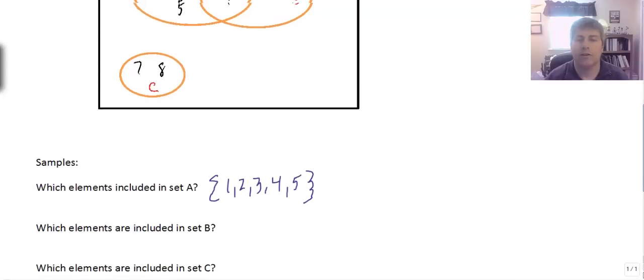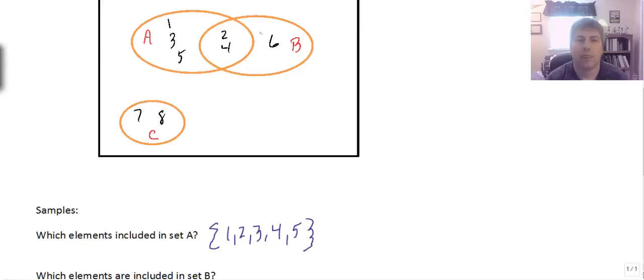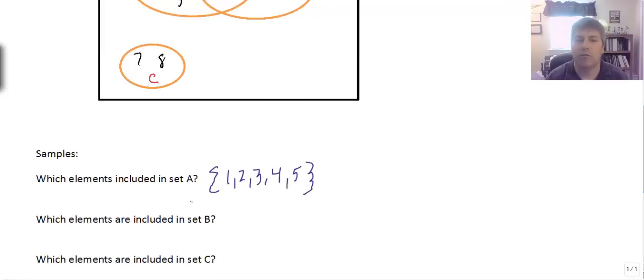What elements are included in set B? Set B, here's the size of set B, part of our Venn diagram, and inside set B are two, four, and six. So those include the elements two, four, and six.